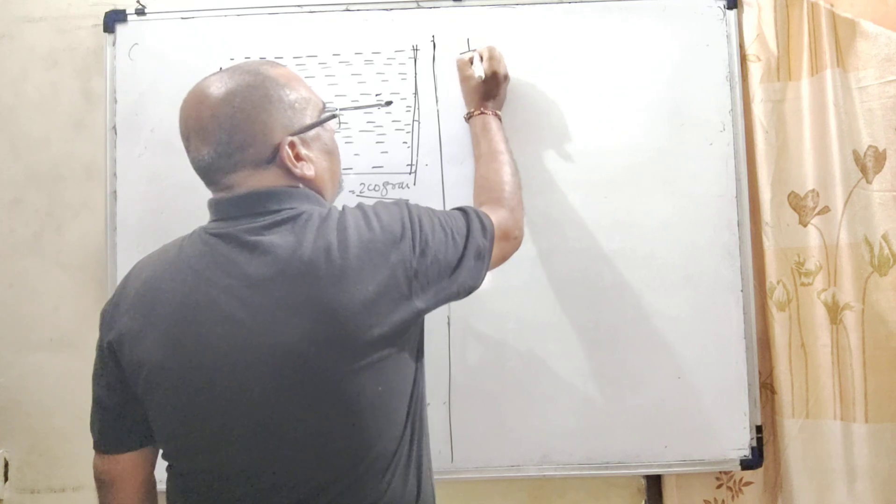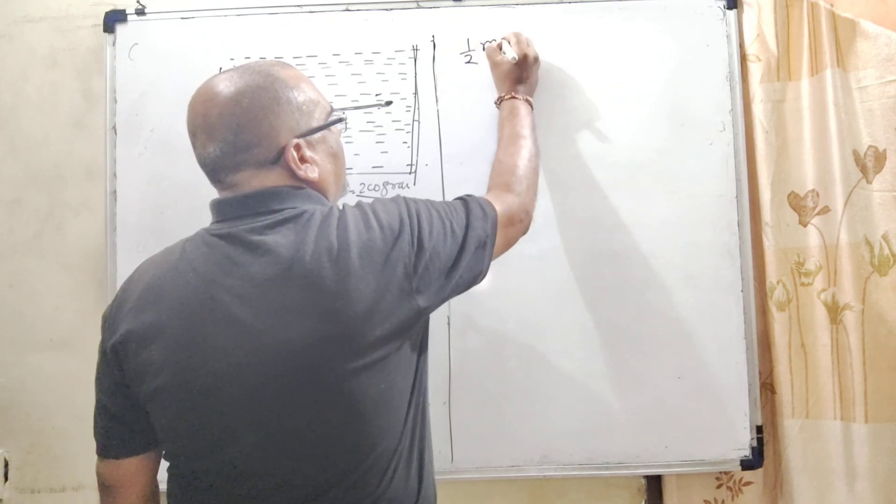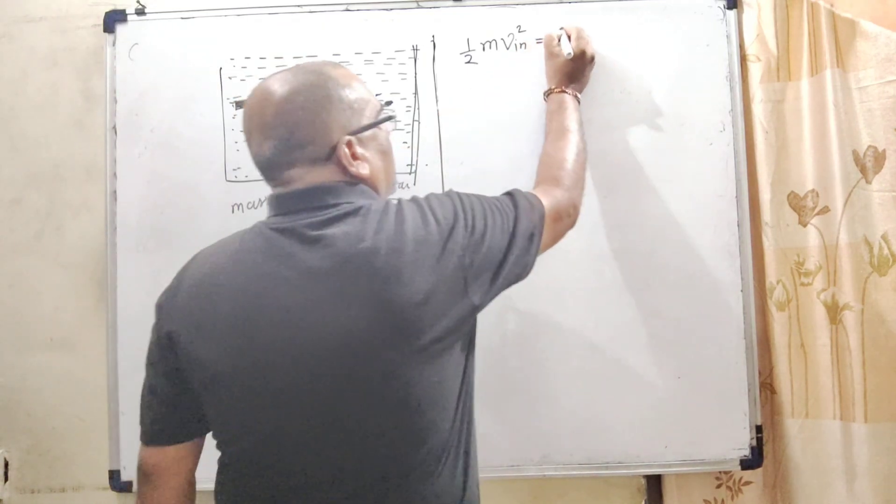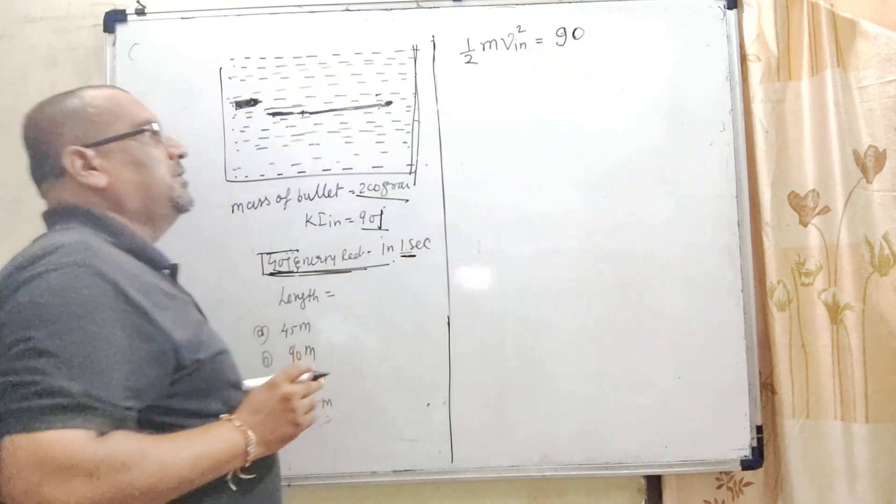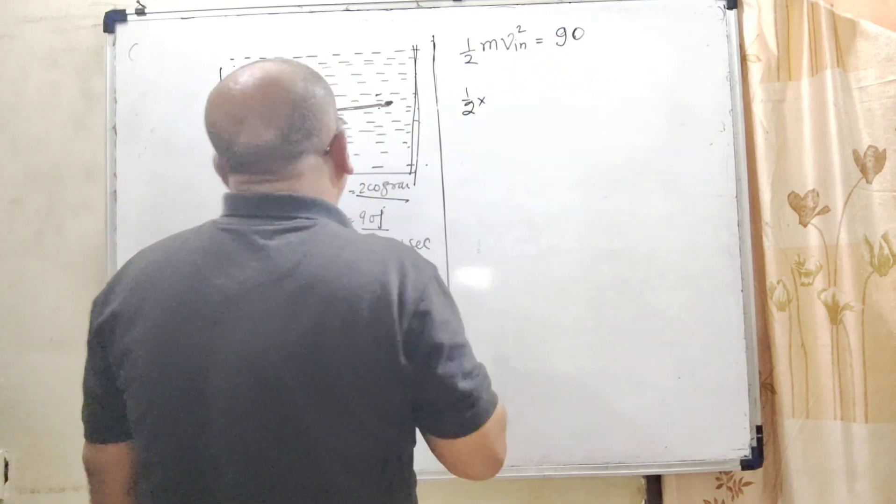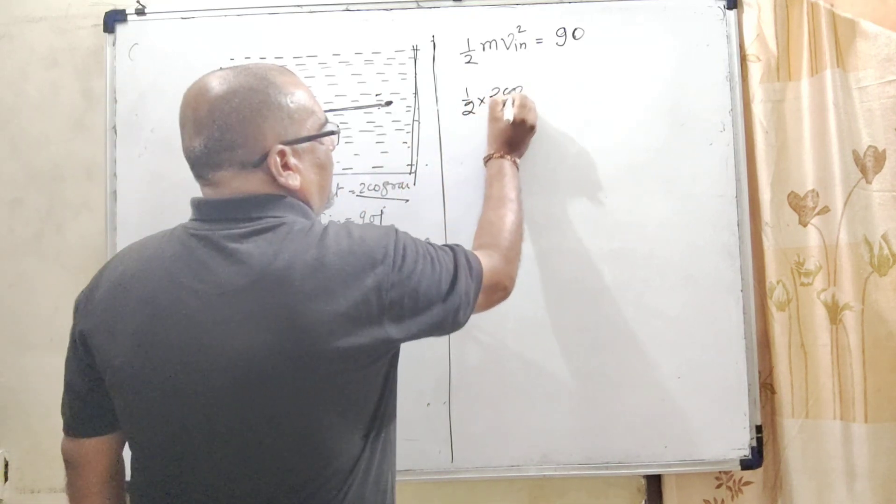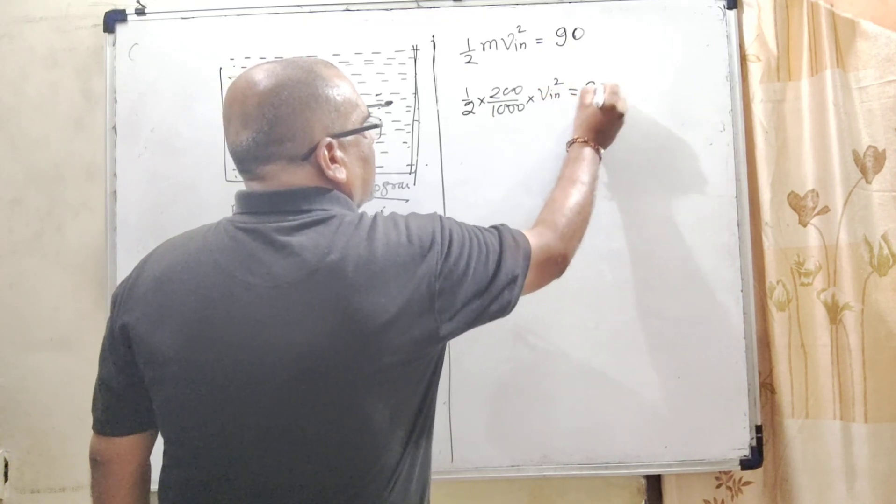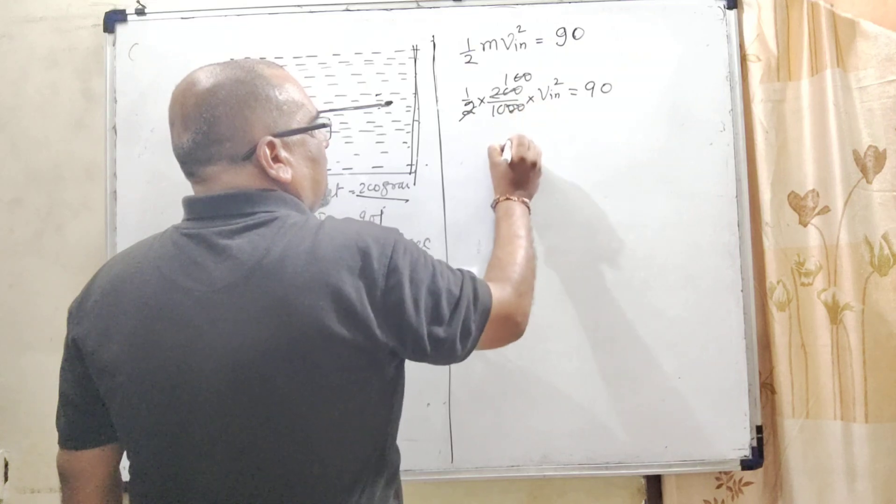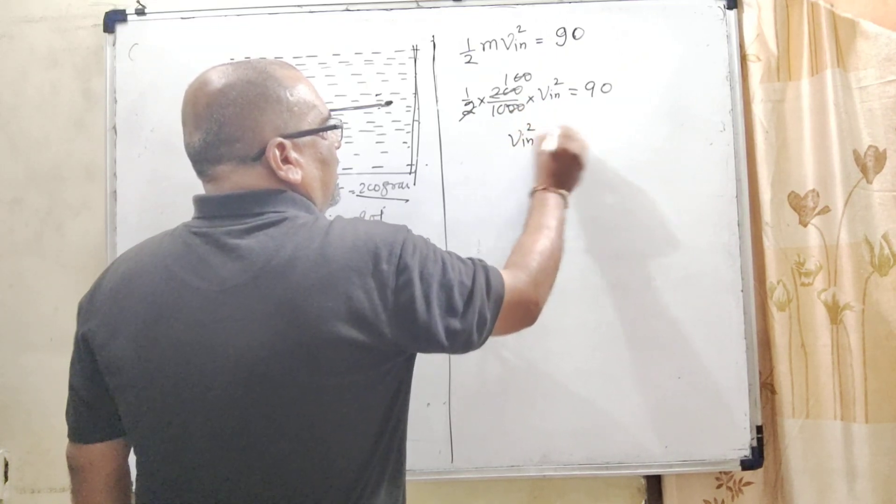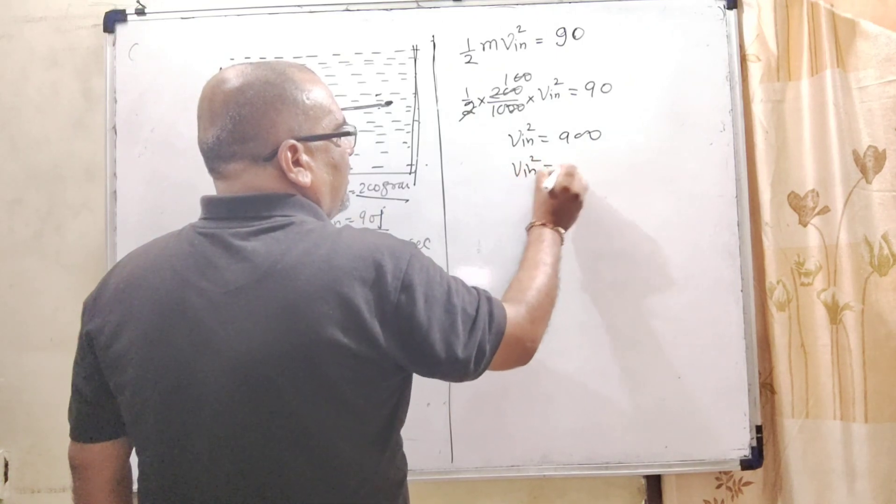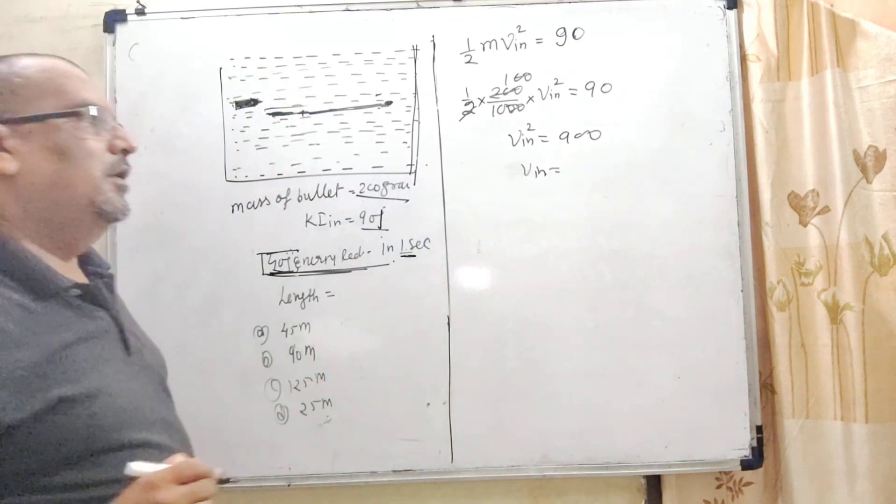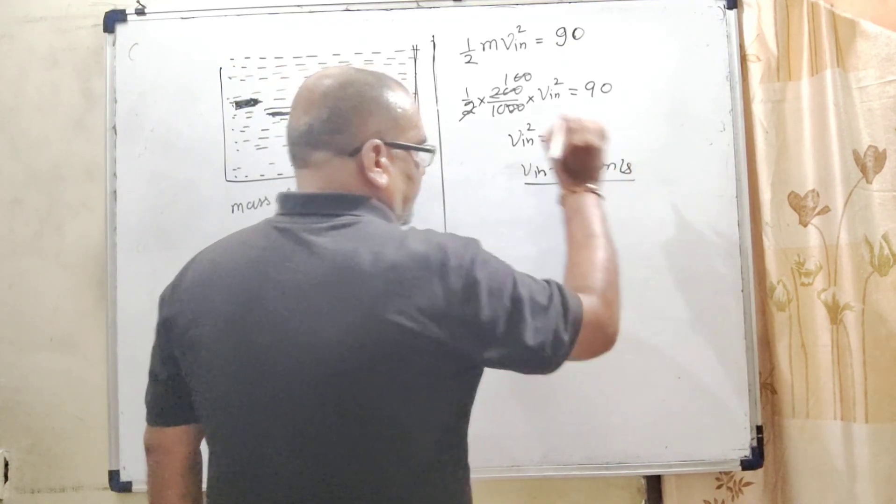Let us first use the initial kinetic energy. The initial kinetic energy given is 90 Joules. With this, we can find the initial velocity. The mass of the bullet is 200 grams, so convert to kilograms: 200 divided by 1000. One-half m times initial velocity squared equals 90. This gives 90 times 10 equals 900, the square of initial velocity. Taking the square root of 900, the initial velocity is 30 meters per second.